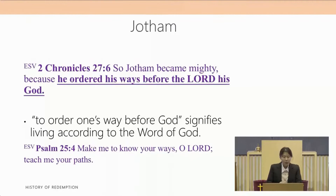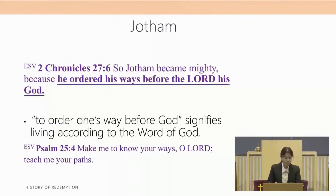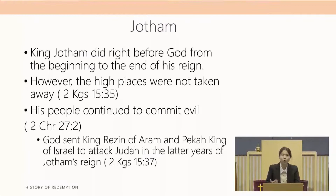2 Chronicles 27 verse 6 records that Jotham became mighty because he ordered his ways before the Lord his God — meaning he lived according to the word of God. May we pray like David in Psalms 25 verse 4: Make me to know your ways, O Lord; teach me your path. King Jotham was a good king from beginning to end of his reign. However, the high places were not taken away and sadly his faith was not transmitted down to his people. His people continued to commit evil as recorded in 2 Chronicles 27 verse 2. As a result, God sent King Razin of Aram and Pekah king of Israel to attack Judah in the latter years of Jotham's reign.